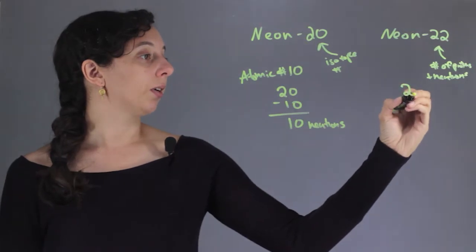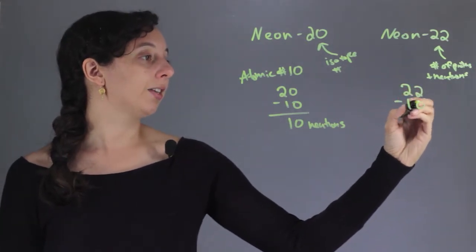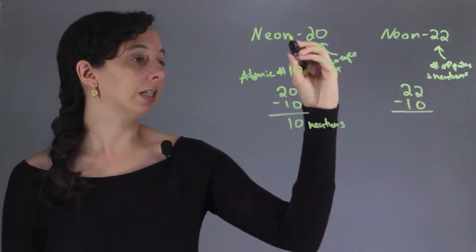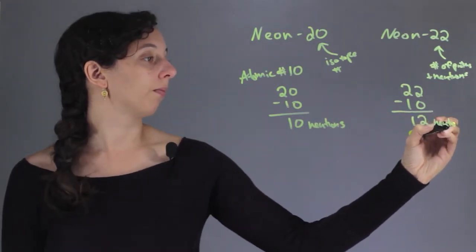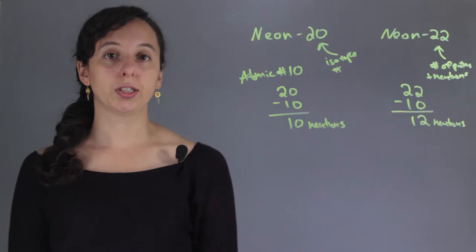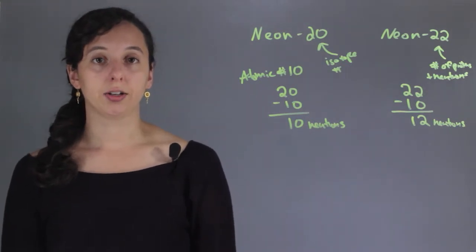And Neon-22 still has to have 10 protons because it's still Neon. We'll have 12 neutrons. So this is the big difference in how the nuclei differ.